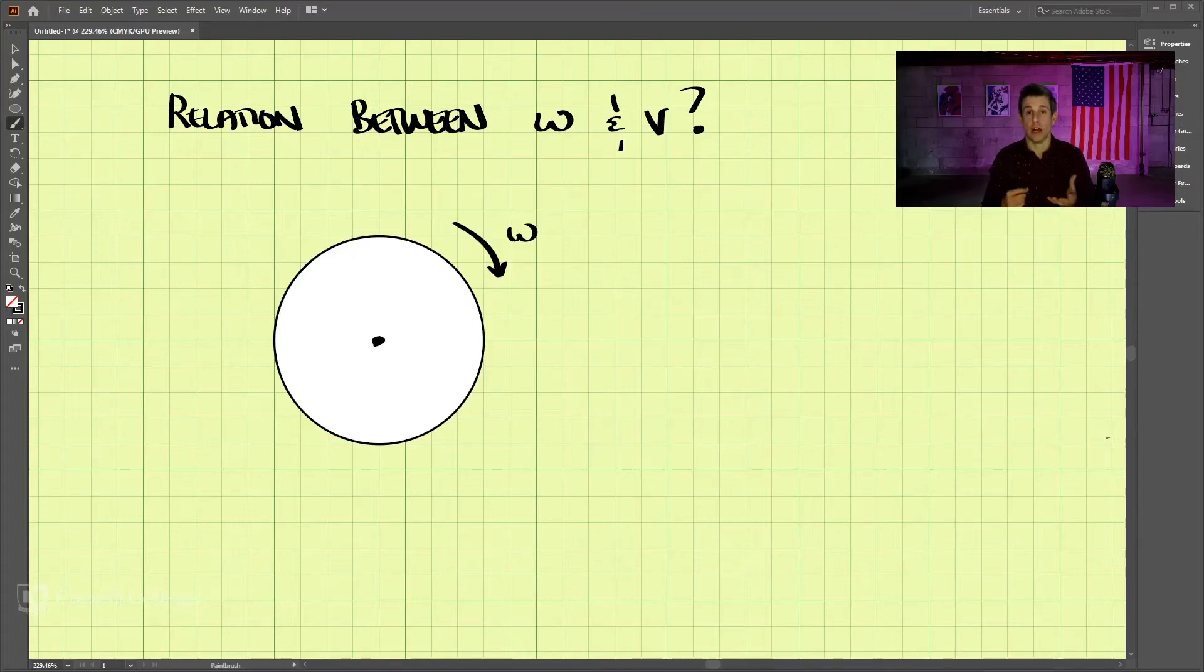So what is the relationship between velocity and angular velocity? Let's pretend we have this spinning disk here. It has an angular velocity of omega. And we are looking for what is the velocity at this point on the outside A.